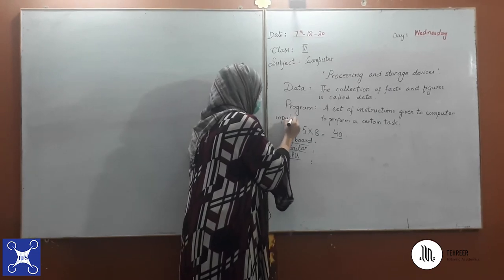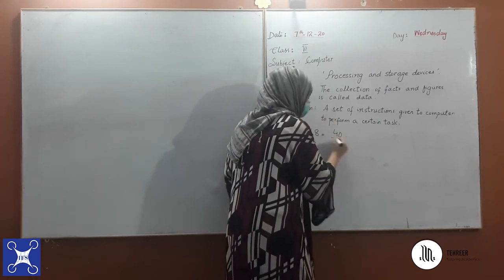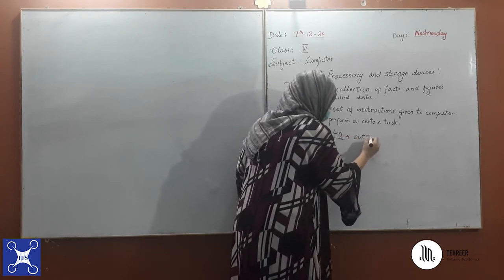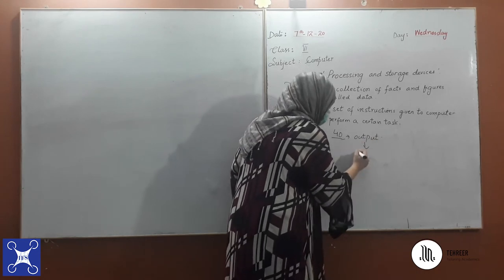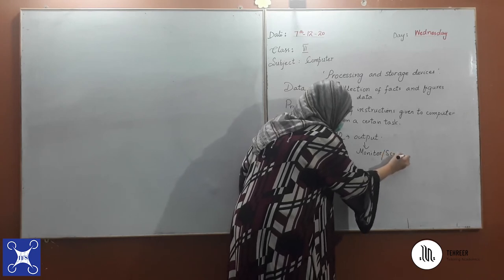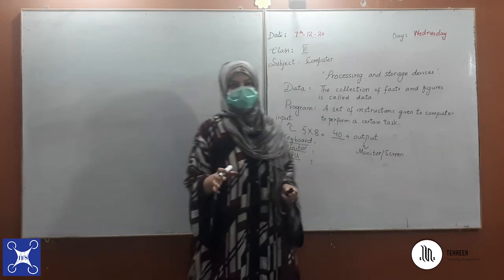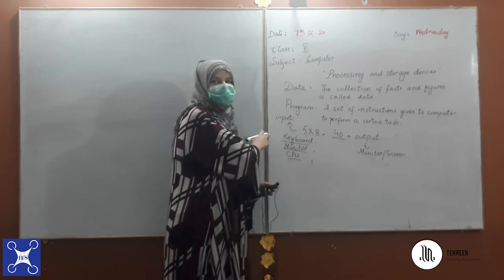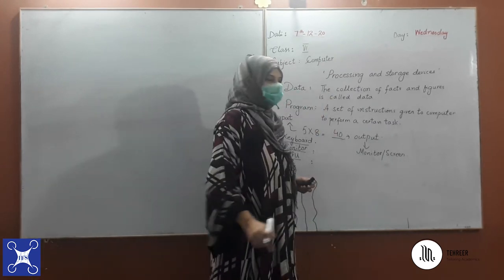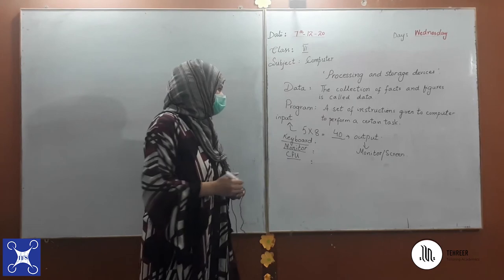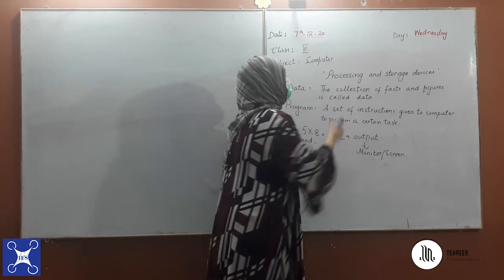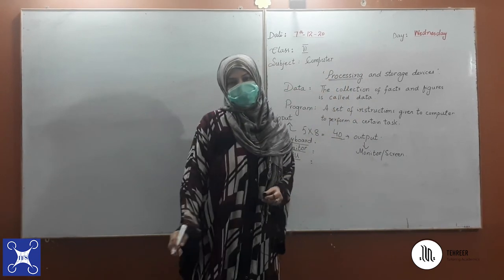The input is what we provide, and the result given back to us is called output. Where is it shown? On the monitor or the screen. So the monitor is an output device and the keyboard is an input device, through which we give instructions to perform a certain task — in this case, multiplication. The monitor is an output device.